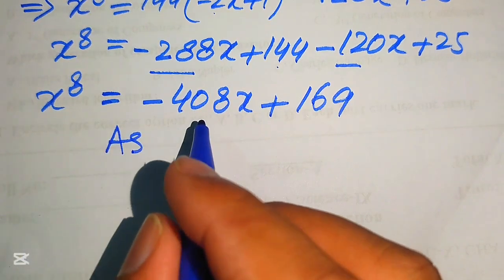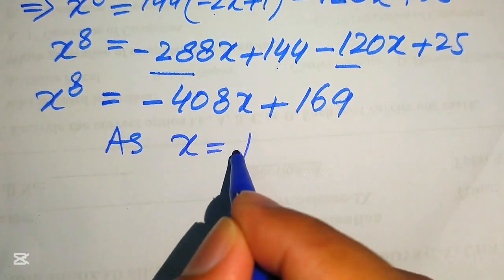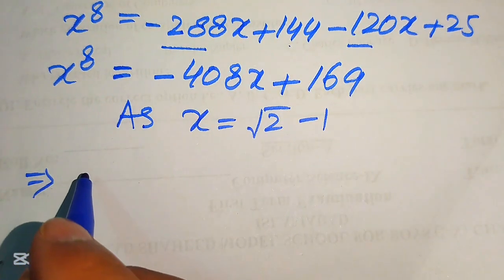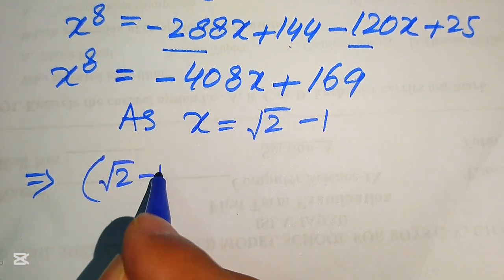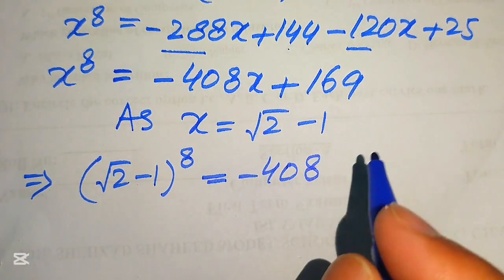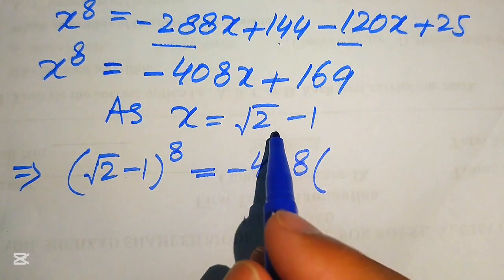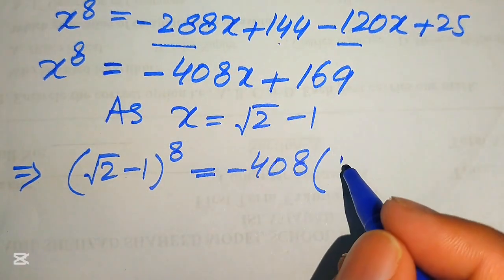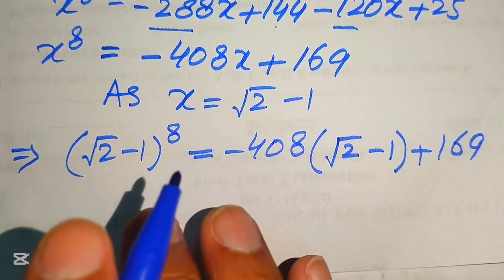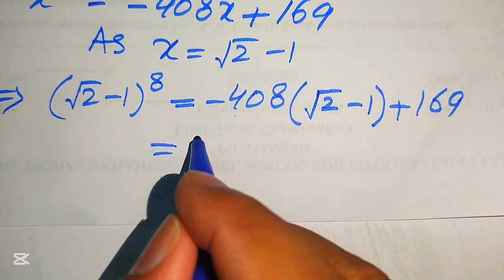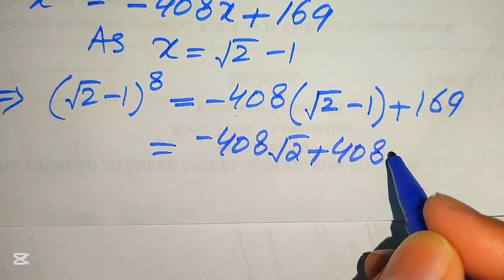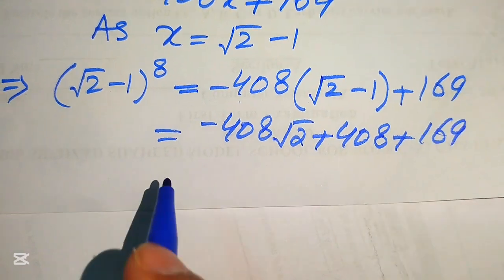We back-substitute the value of x. Since we set x equal to the square root of 2 minus 1 at the start, substituting gives: x to the power of 8 equals minus 408 times of square root of 2 minus 1 plus 169. Multiplying through, this becomes minus 408 times square root of 2 plus 408 plus 169.